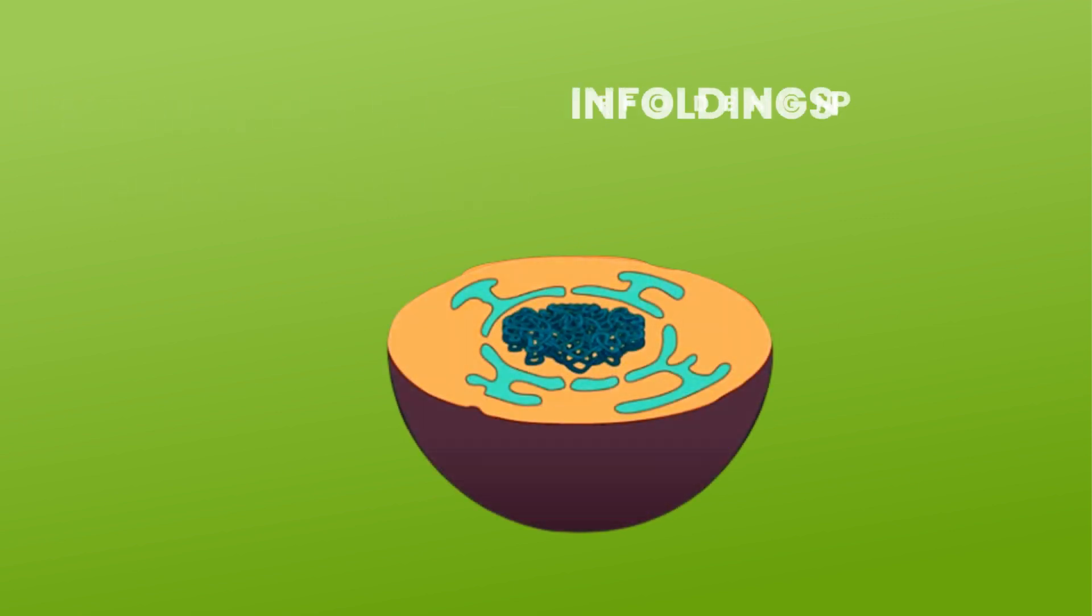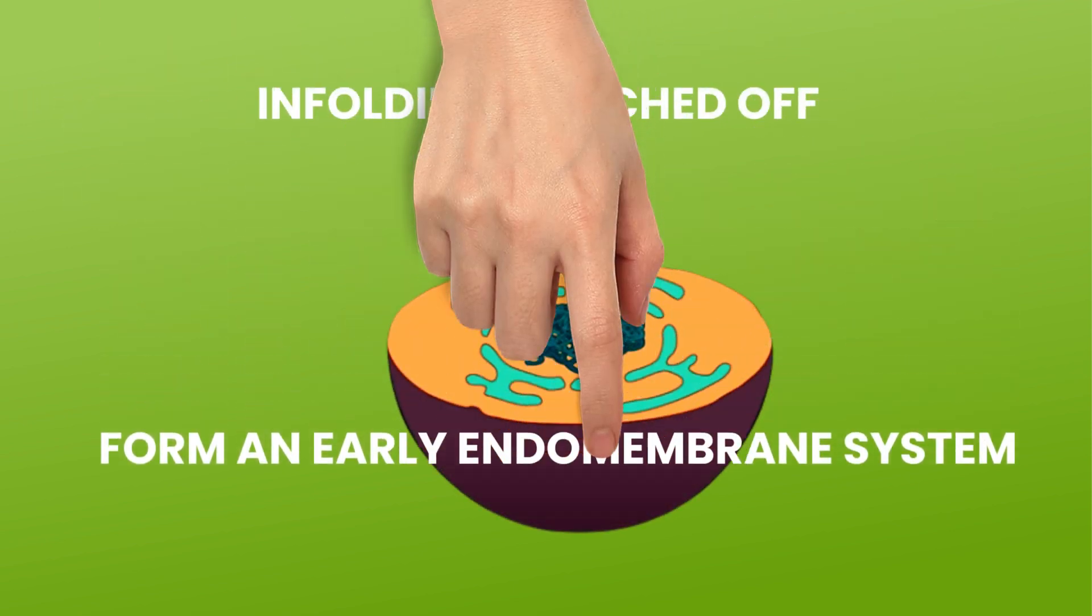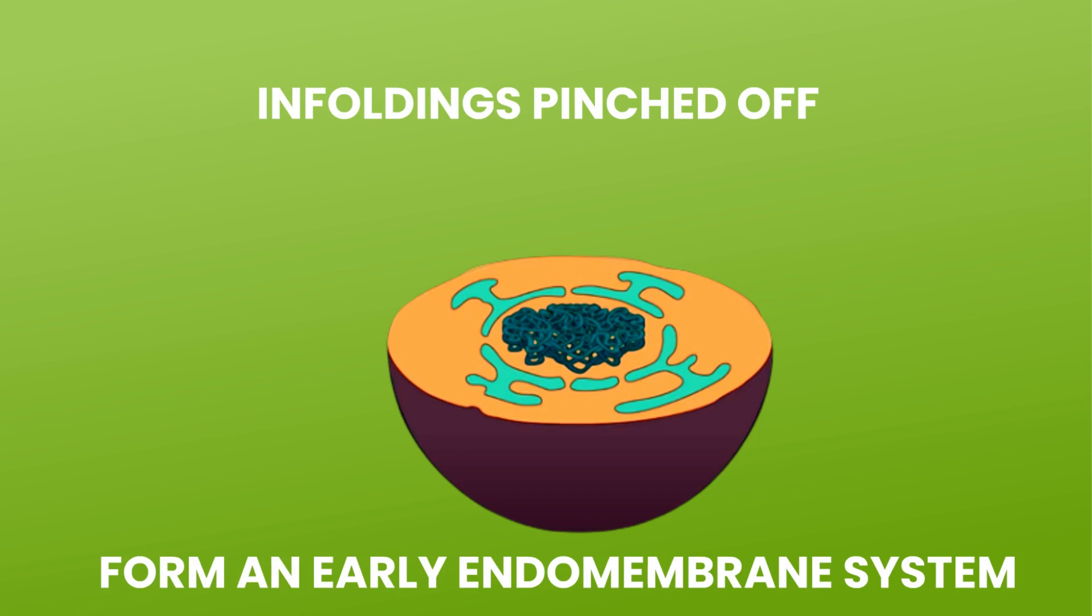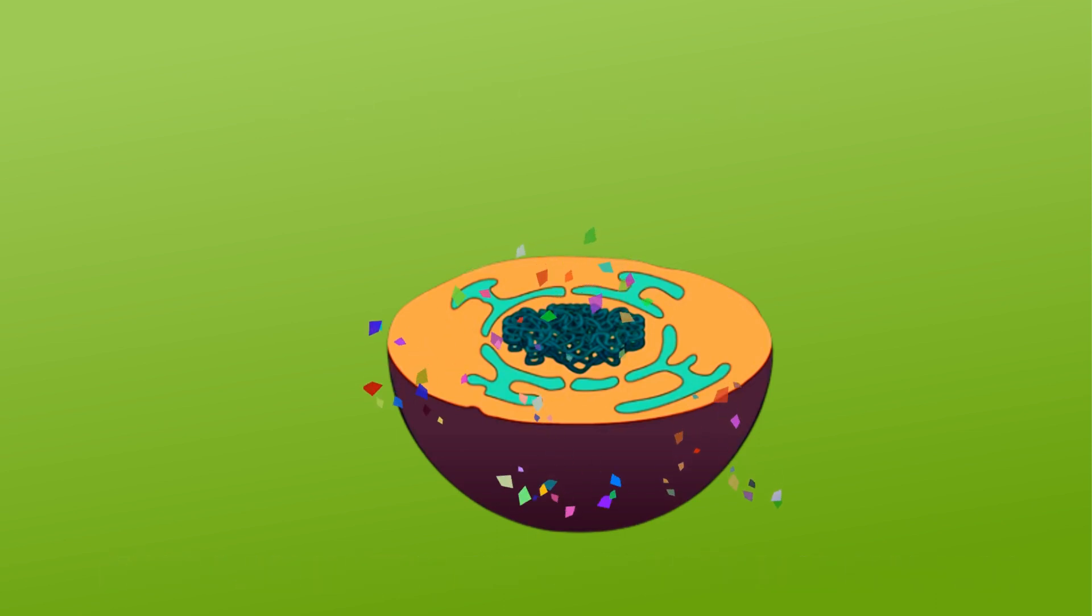Eventually, these enfoldings pinched off from the cell membrane to form an early endomembrane system surrounding the nucleoid. This was the first membrane bound nucleus, and hence this was the first eukaryotic cell.